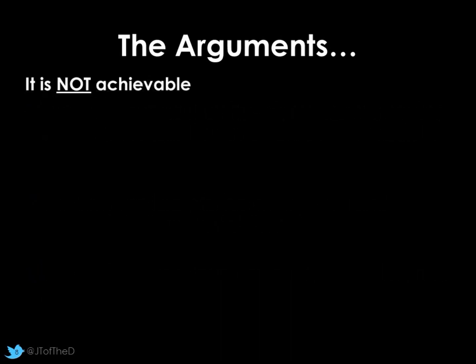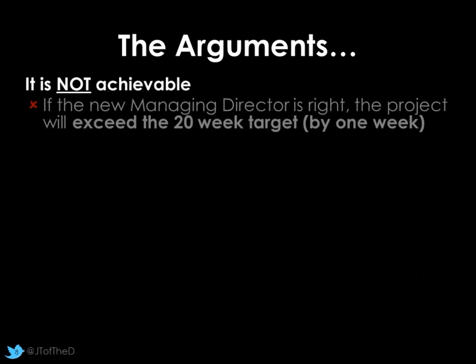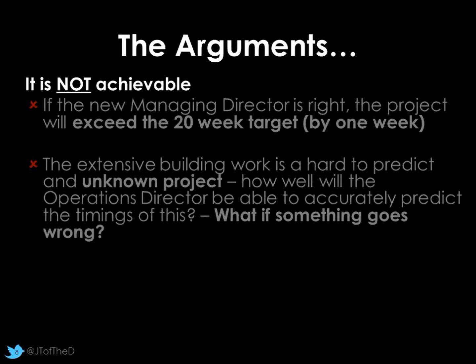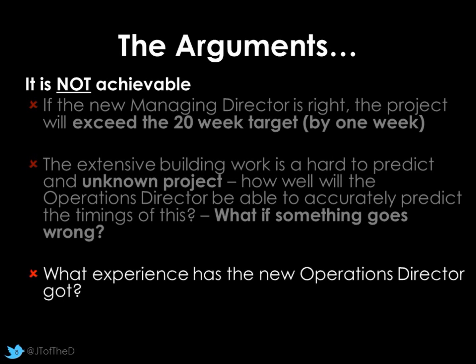But we need a counter-argument - why might it not be achievable? The managing director is a marketing expert, and if he is correct, the project could well exceed 20 weeks, putting us a week over where we want to be. That's significant if the 20-week launch is a very big affair - it could be make or break for this product this year. The building work is an unknown project - how will the operations director know the information is correct? Building work notoriously overruns. And what experience has this new operations director got in putting a critical path together, or in this business? These unknowns and uncertainty will detract from the accuracy of the predictions in our critical path analysis.